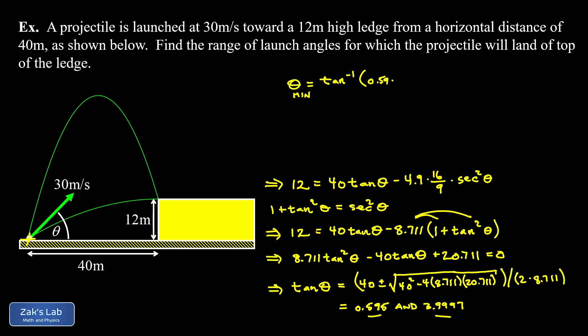is 0.595. In other words, arctan(0.595). And when I run the numbers on this to three significant digits, I get 30.8 degrees.